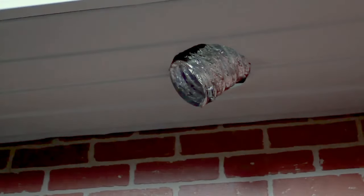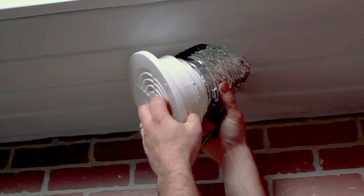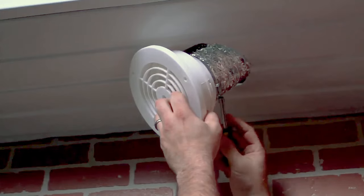From the bathroom or kitchen fan, feed the duct through the opening. Connect the duct to the soffit exhaust vent collar using the appropriately sized worm drive clamp.